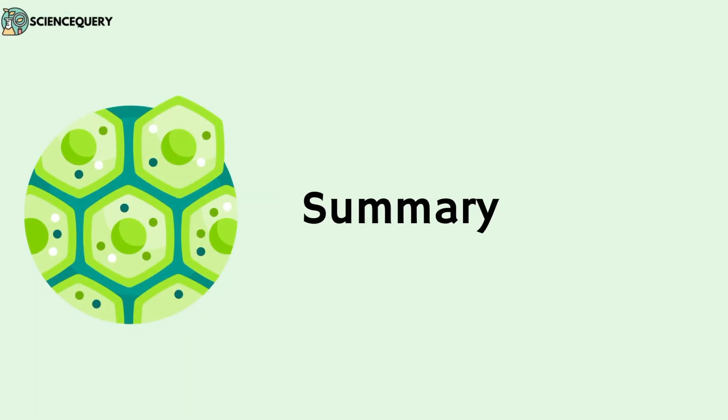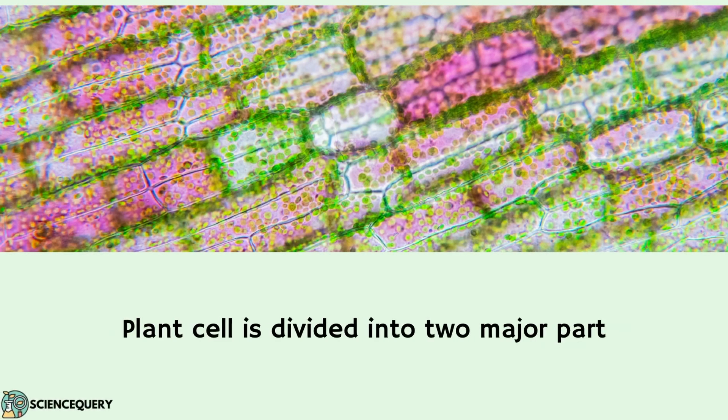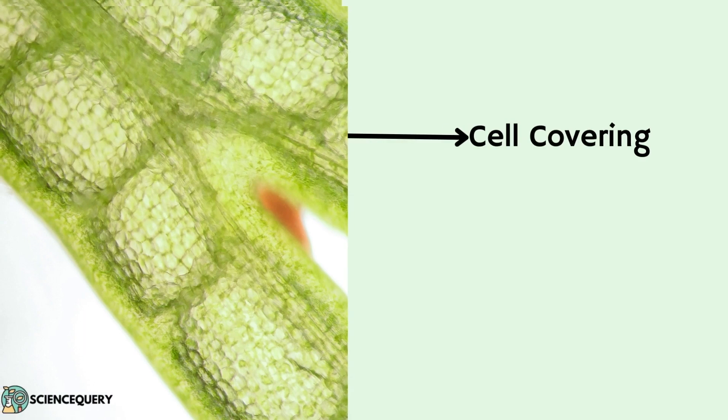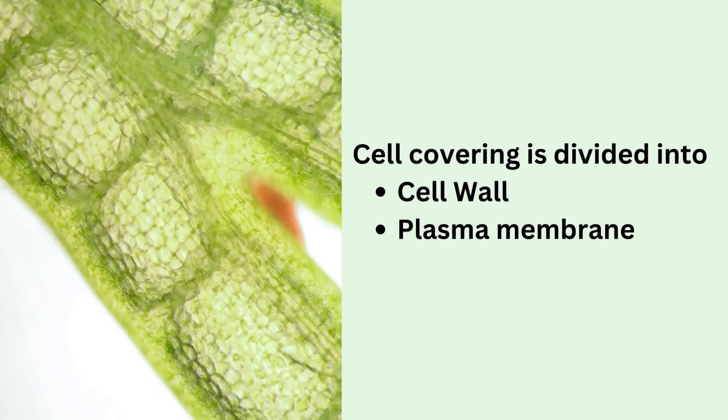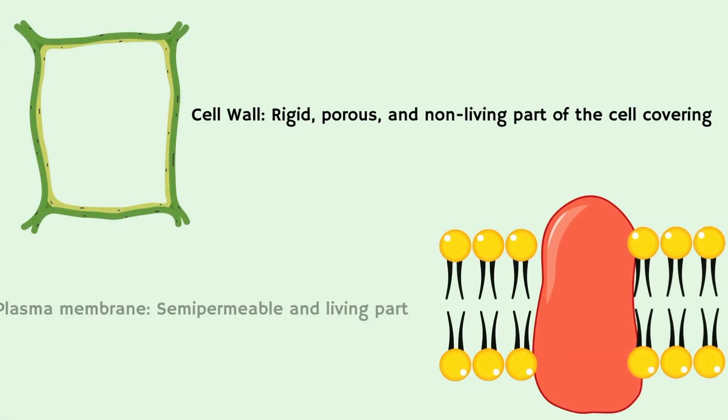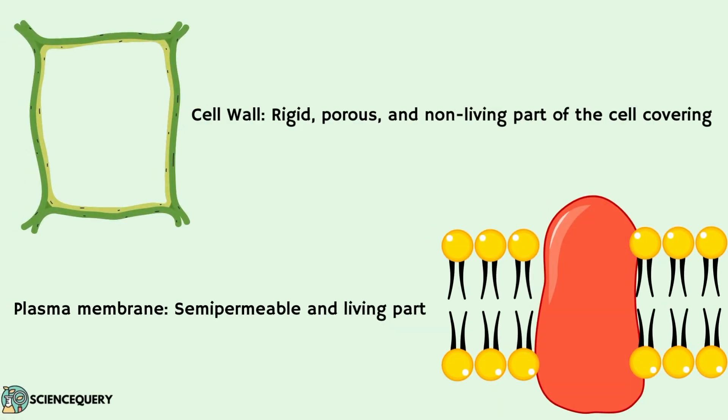Before wrapping this video, let us summarize the main points in this topic. The plant cell is divided into two major parts: the cell covering and the protoplasm. The cell covering gives the shape and structure to the cell and is divided into cell wall and plasma membrane. Cell wall is the rigid non-living part and plasma membrane is the semi-permeable living part.